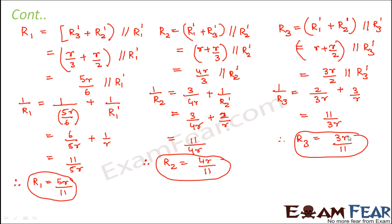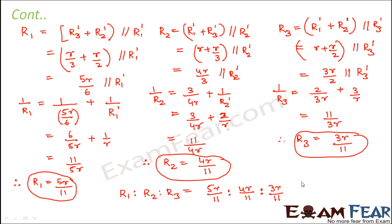So R1 : R2 : R3 = 5R/11 : 4R/11 : 3R/11 = 5 : 4 : 3. The key insight is that R1, R2, R3 are different from R1-dash, R2-dash, R3-dash. The net resistance between A and B is not simply R1-dash, but rather R1-dash in parallel with the series combination of the other two resistances.